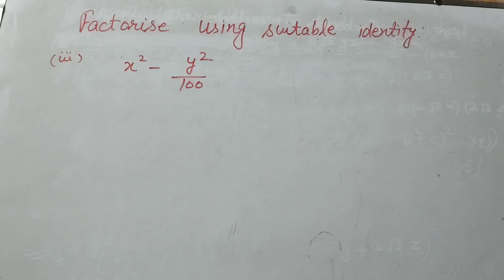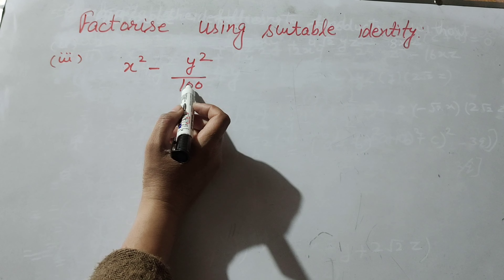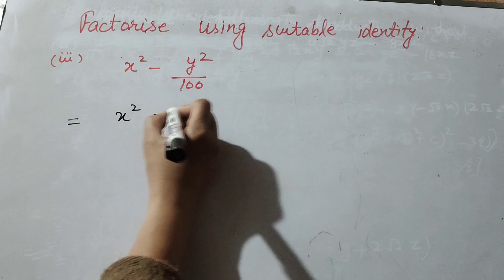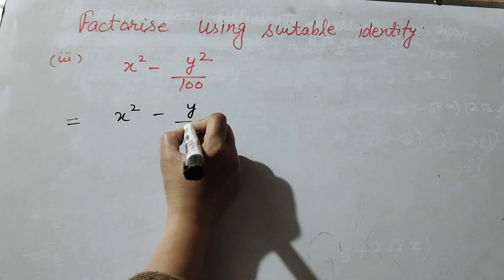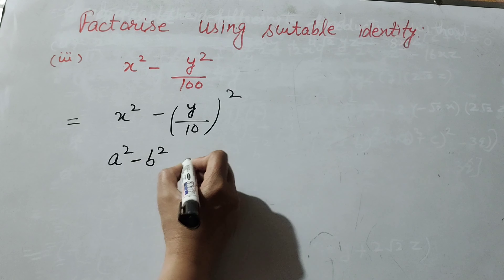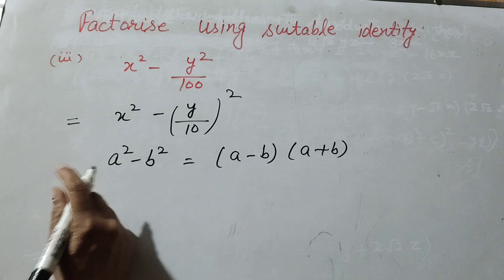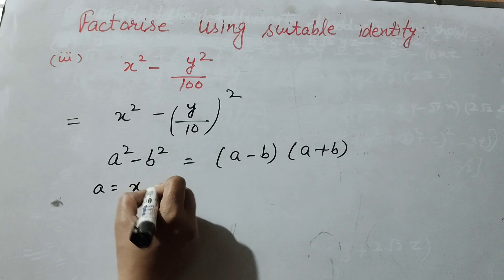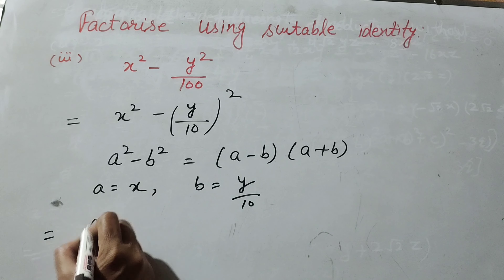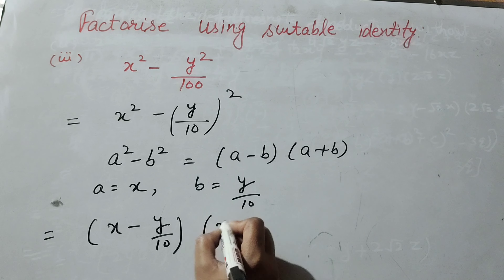Now we move to the next question. In the third part it is x squared minus y squared over 100. We write y squared over 100 as (y over 10) whole squared. We use the identity: a squared minus b squared equals (a minus b) into (a plus b). Here a equals x and b equals y over 10. So the answer is (x minus y over 10) into (x plus y over 10).